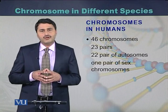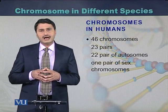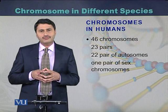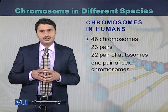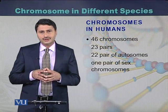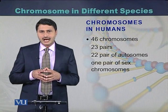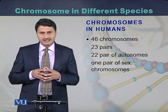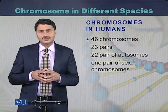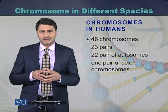Looking at the number of chromosomes in humans: humans have a total of 46 chromosomes. Out of these 46 chromosomes, 2 are sex chromosomes and 44 are autosomes.